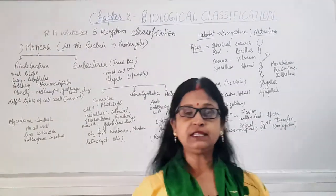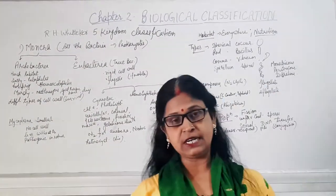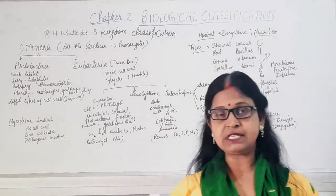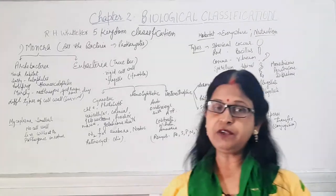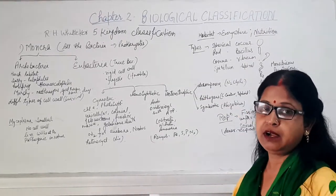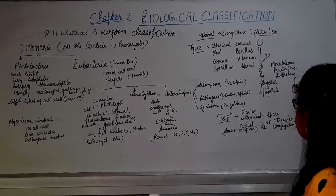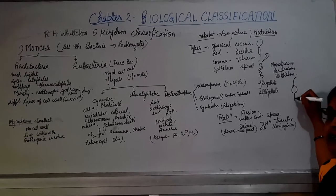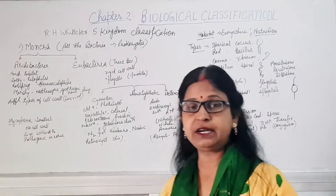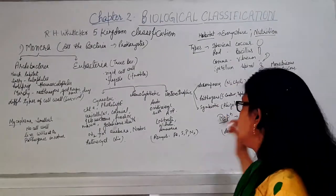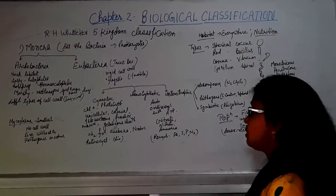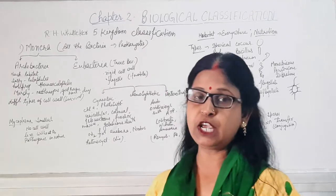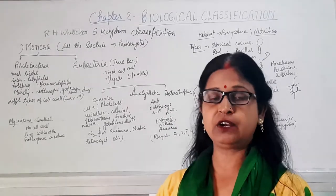Bacteria may be either flagellate or non-flagellate (aflagellate). If flagella are present at one point only, the bacterium is known as monotrichous. If on both sides, it is known as ditrichous. If flagella are present all around the surface of the cell, it is known as peritrichous. So depending upon shape and presence of flagella, bacteria are of different types.